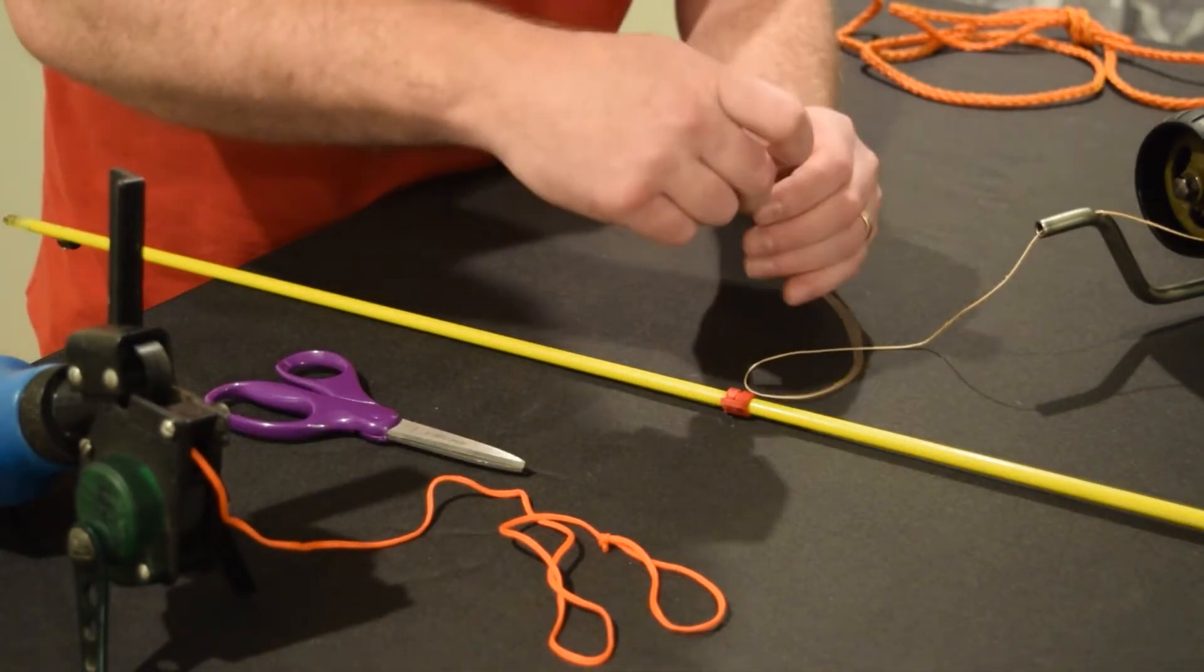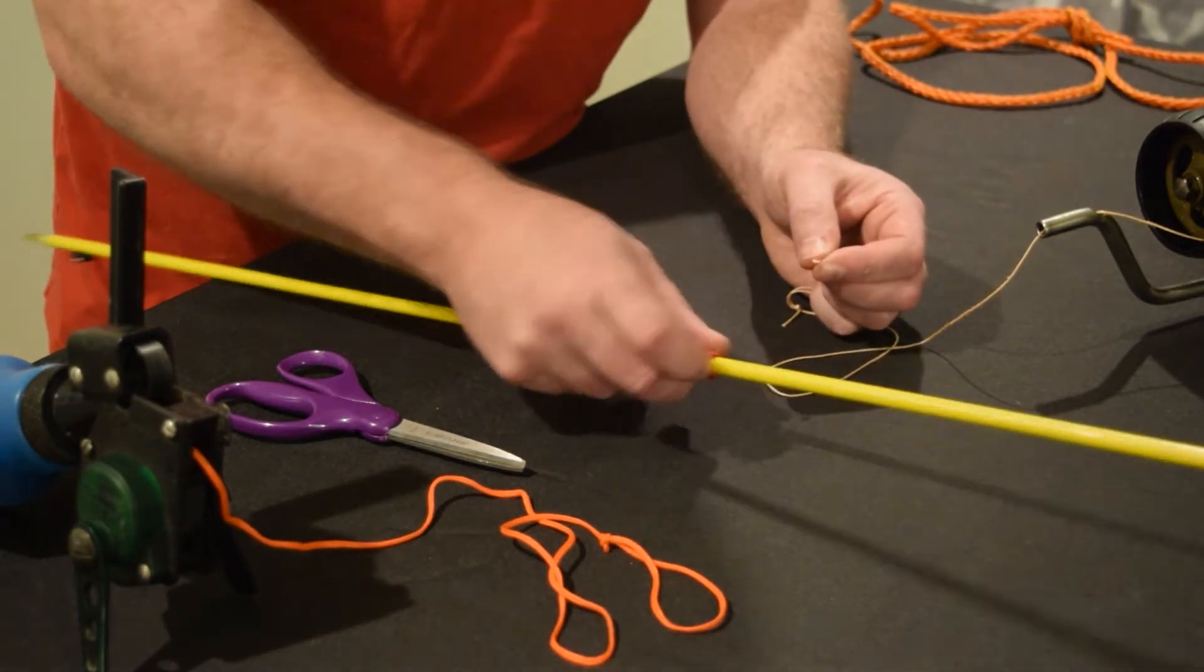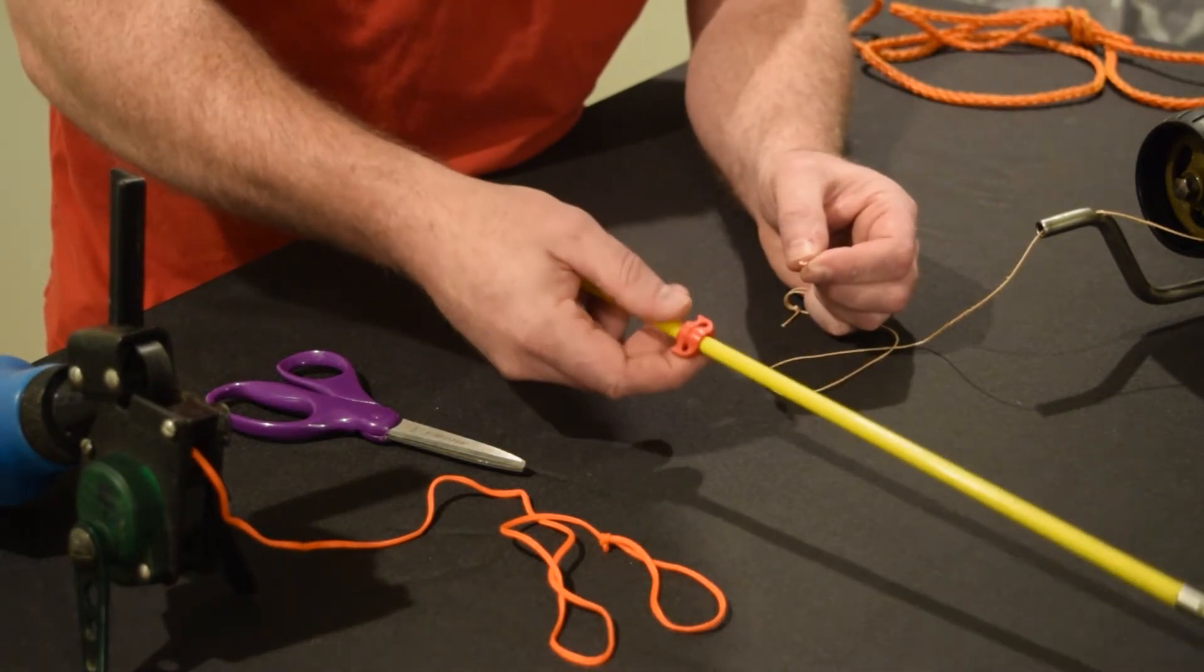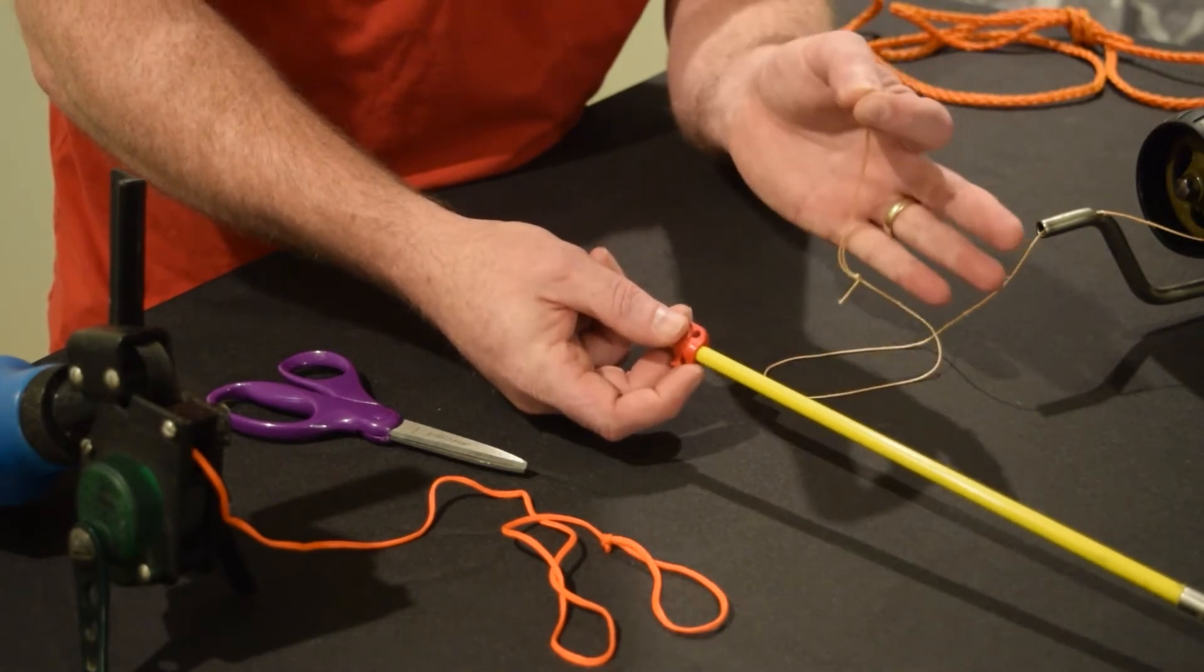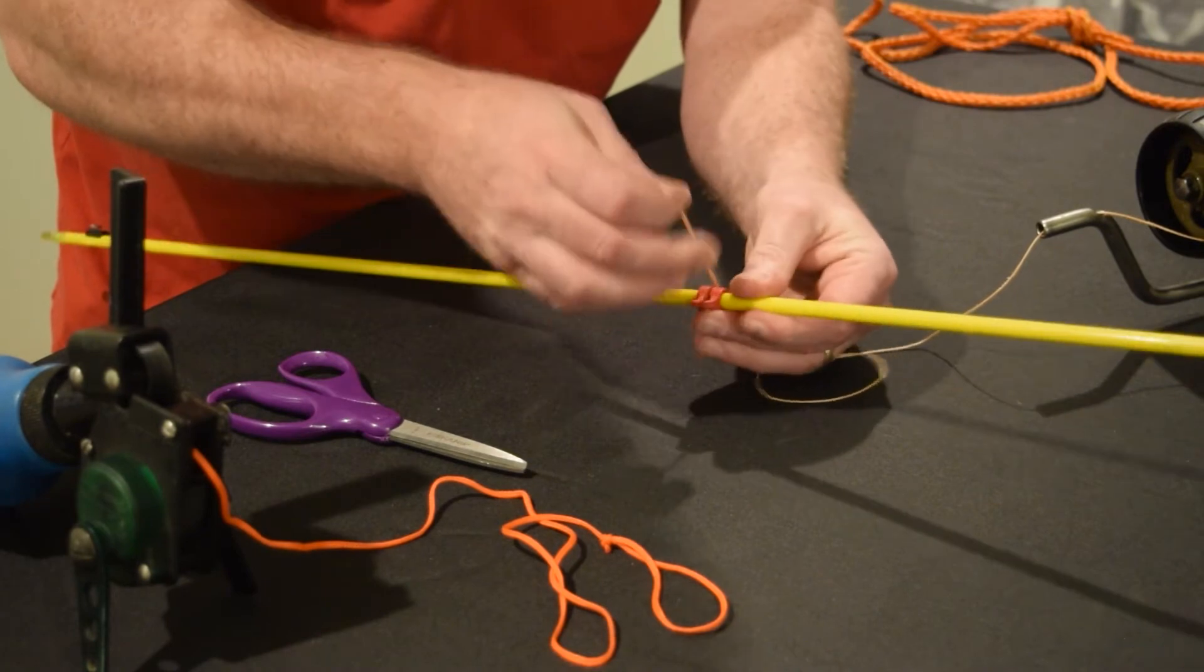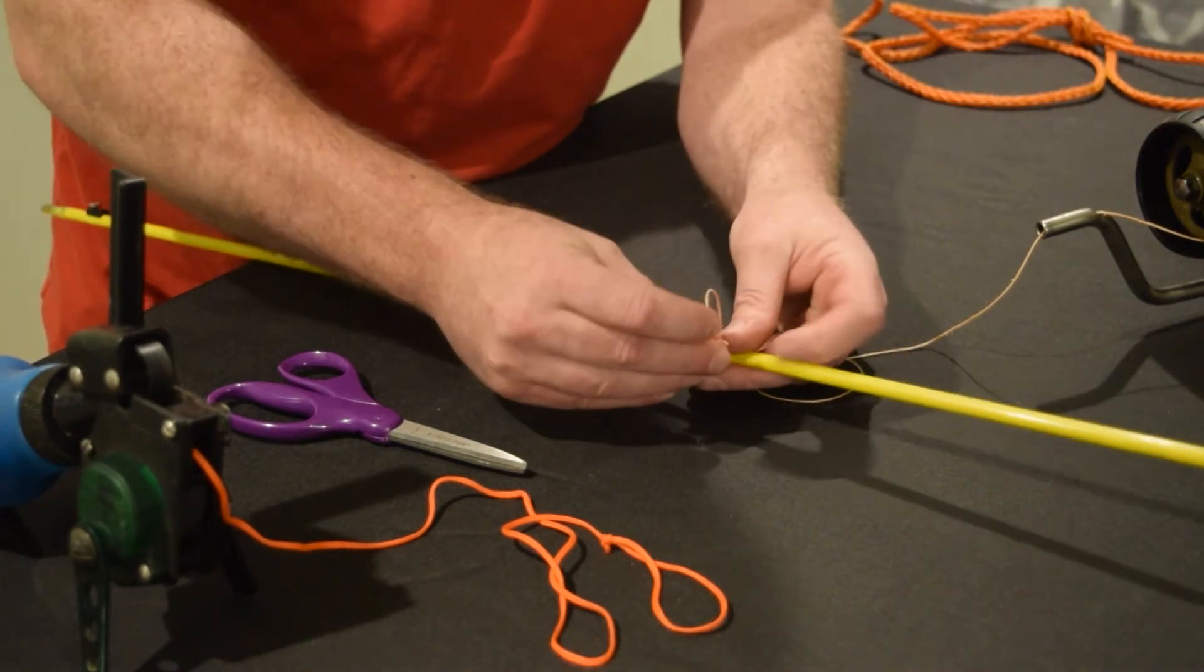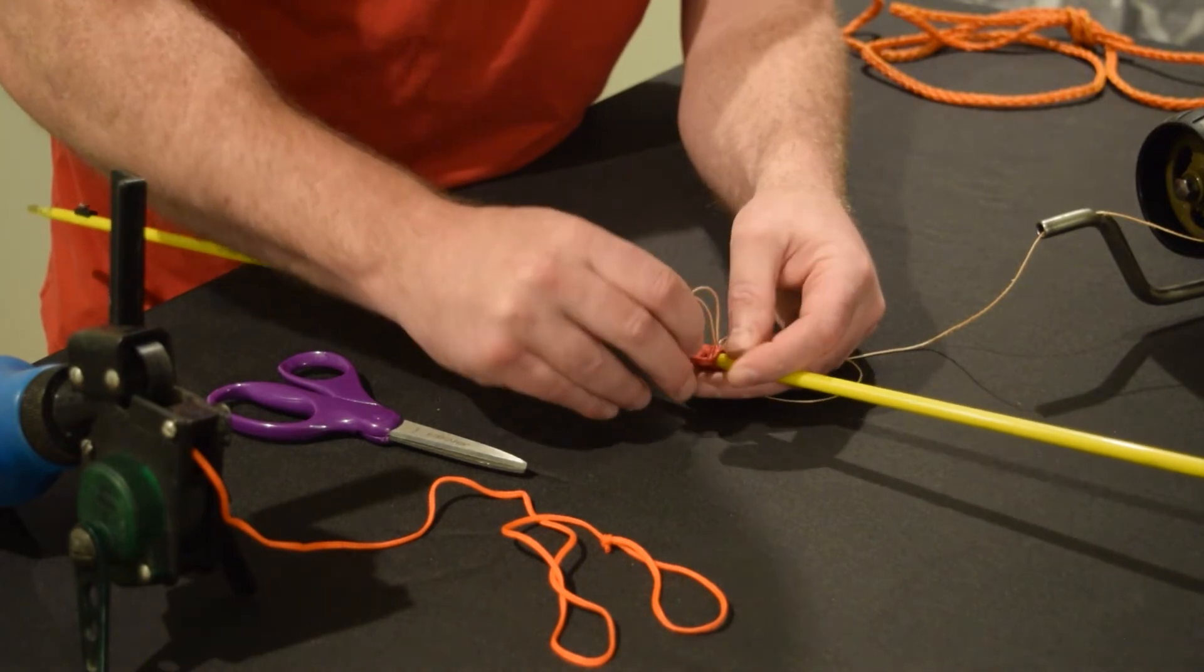This is the type of line that you would use with a spin cast reel. I'm going to start again from the back side. I'm going to pinch the loop that's on the end of the braid, and I'm going to feed it up through, and then around the grooved part of the safety slide, and back down through the other side.